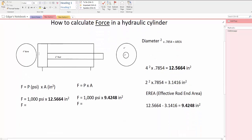Earlier we calculated the area on the cylinder—the area on the bore side and the area on the rod side of the cylinder.